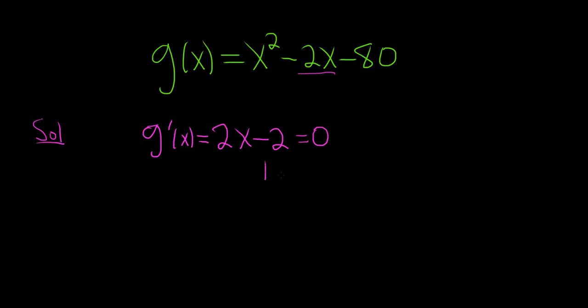All right, we can add 2 to both sides. So we have 2x equals 2, and then divide by 2, so we have x equals 1. And that is our critical number, our CN, critical number.